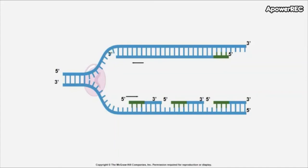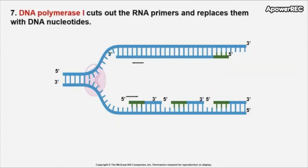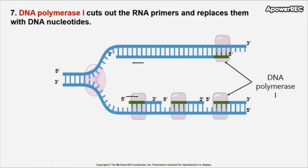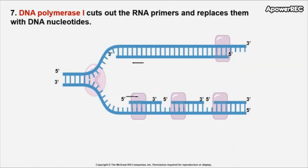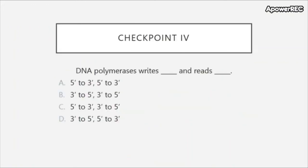Biology has found a way to deal with this: there is another polymerase called DNA polymerase 1. DNA polymerase 1 fixes the issue by cutting out the RNA primers that were made — on the leading strand we cut out that first primer — and replaces them with DNA nucleotides in the same 5-prime to 3-prime direction. Checkpoint four: DNA polymerases write blank and read blank.